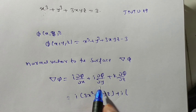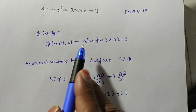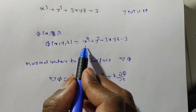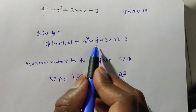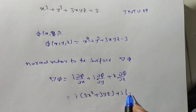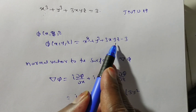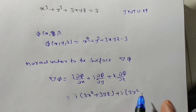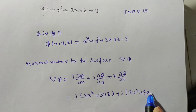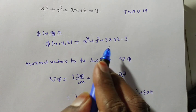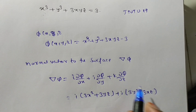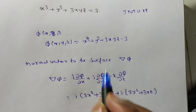For the j component, differentiate with respect to y: x³ does not contain y, so its derivative is 0. The derivative of y³ is 3y². The term 3xyz contains y, and 3xz is a constant, so the derivative is 3xz. The constant −3 gives 0. So ∂φ/∂y = 3y² + 3xz.